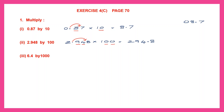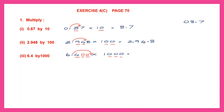Question 3: 6.4 by 1000. So 6.4 multiplied by 1000. Since we have three zeros, the point will move three places to the right. So we move one, two, three places. In the two empty gaps, we put two zeros. The point has moved three places to the right because there are three zeros in 1000. So our answer is 6,400.